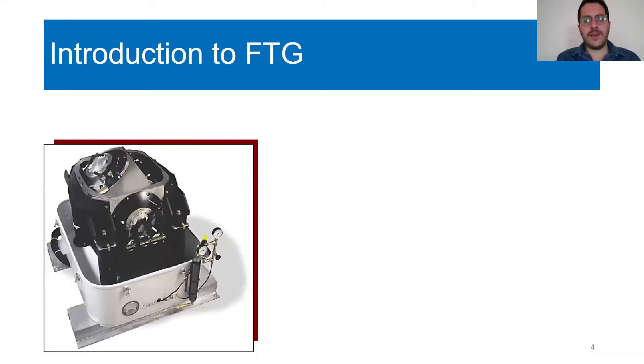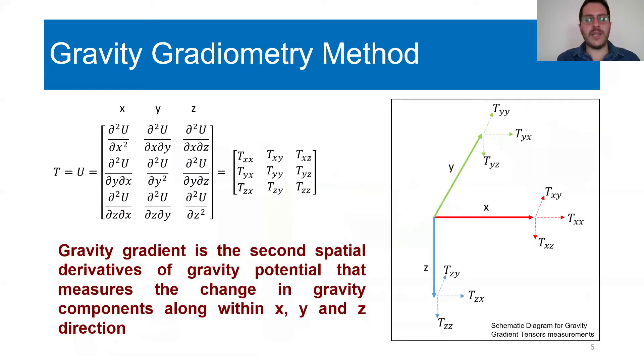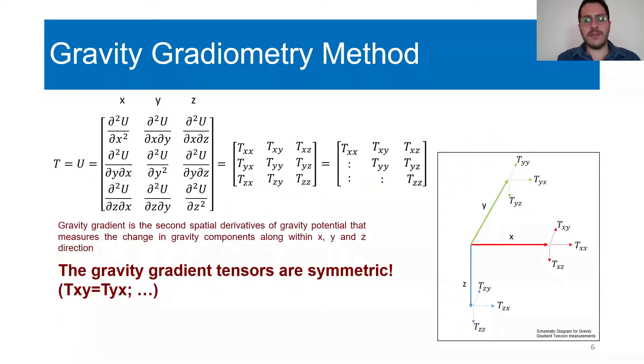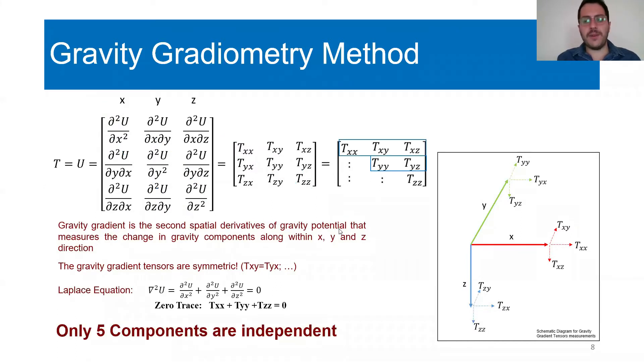The full tensor gradiometric system is owned and operated by Bell Geospace. The system consists of three gravity gradiometric instruments, each of which has four accelerometers. This allows us to measure the full tensor of the gradient, which is the rate of change of the gravity field components along x, y, and z directions. It normally comprises nine components. However, because the gravity gradient sensors are symmetric and for measurements made above Earth's surface, gravitational potential obeys the Laplace equation, which means the summation of the diagonal components of the gradients equals zero. Therefore, we end up only having five components that are truly independent.